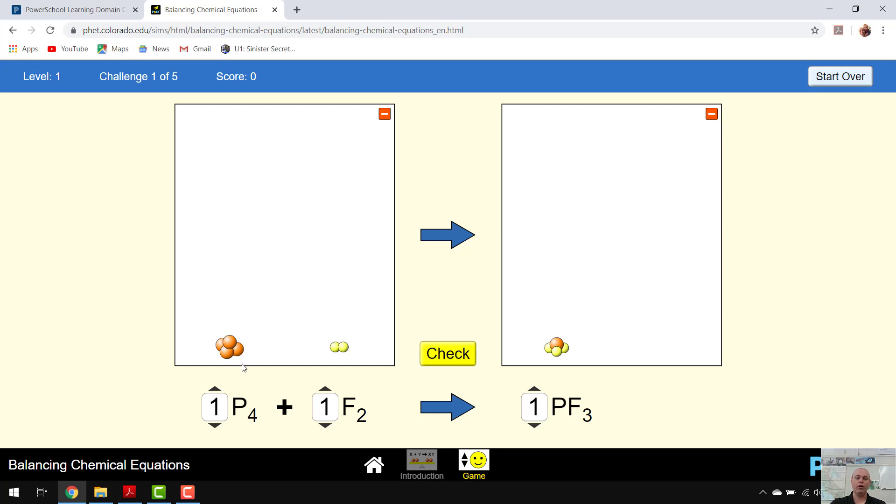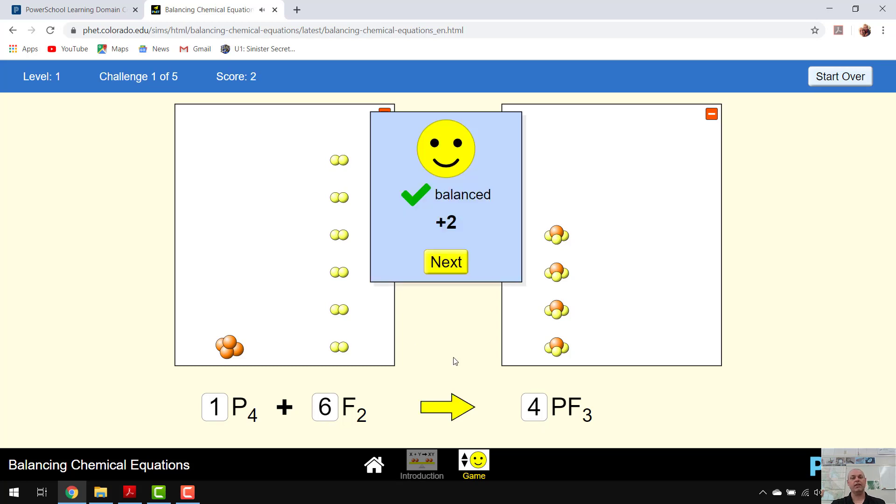I see that I have four phosphates over here and one over here. So I'm definitely going to need more. I'm going to need at least four. And then fluorines, I'm way off on fluorines. Looks like we have four times three is twelve fluorines. So to get twelve over here, I would need to go to six. All right, four and four, twelve and twelve, and then we check it. And that's that.